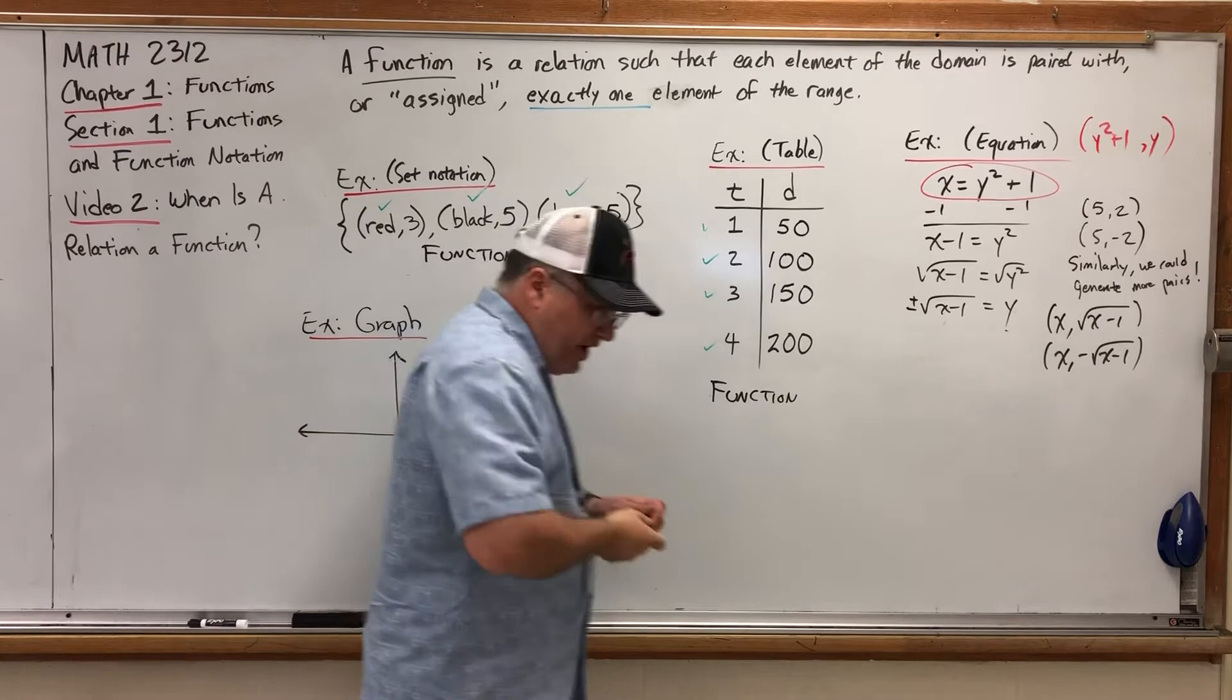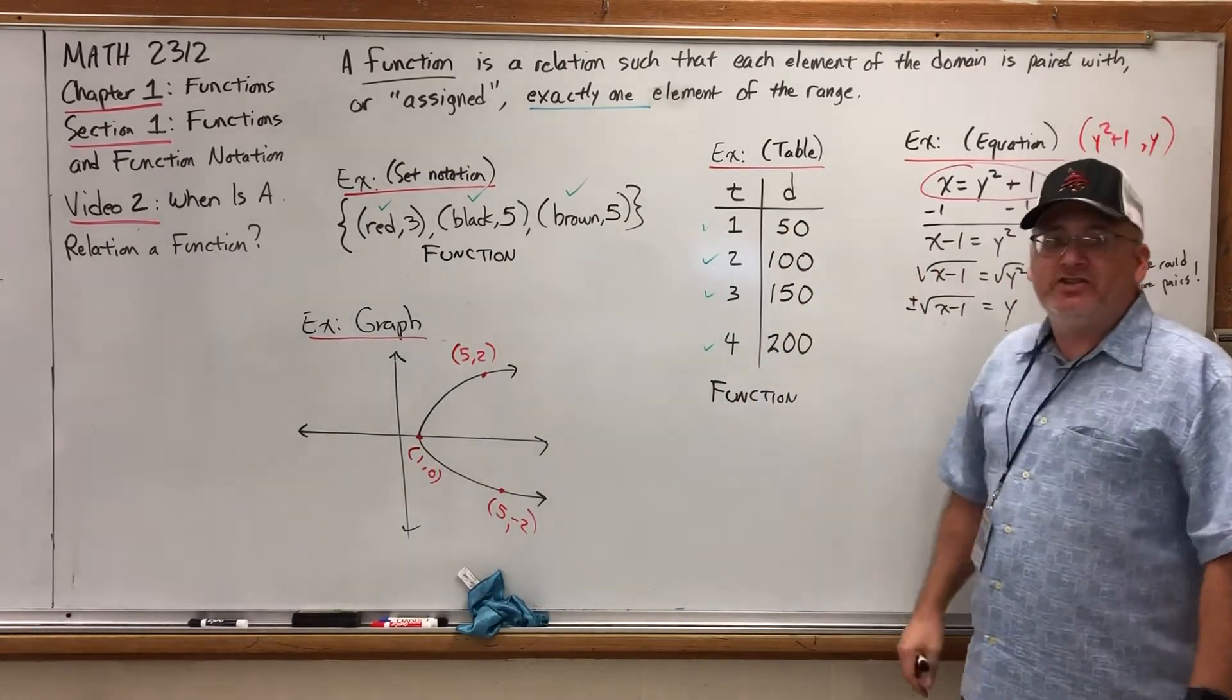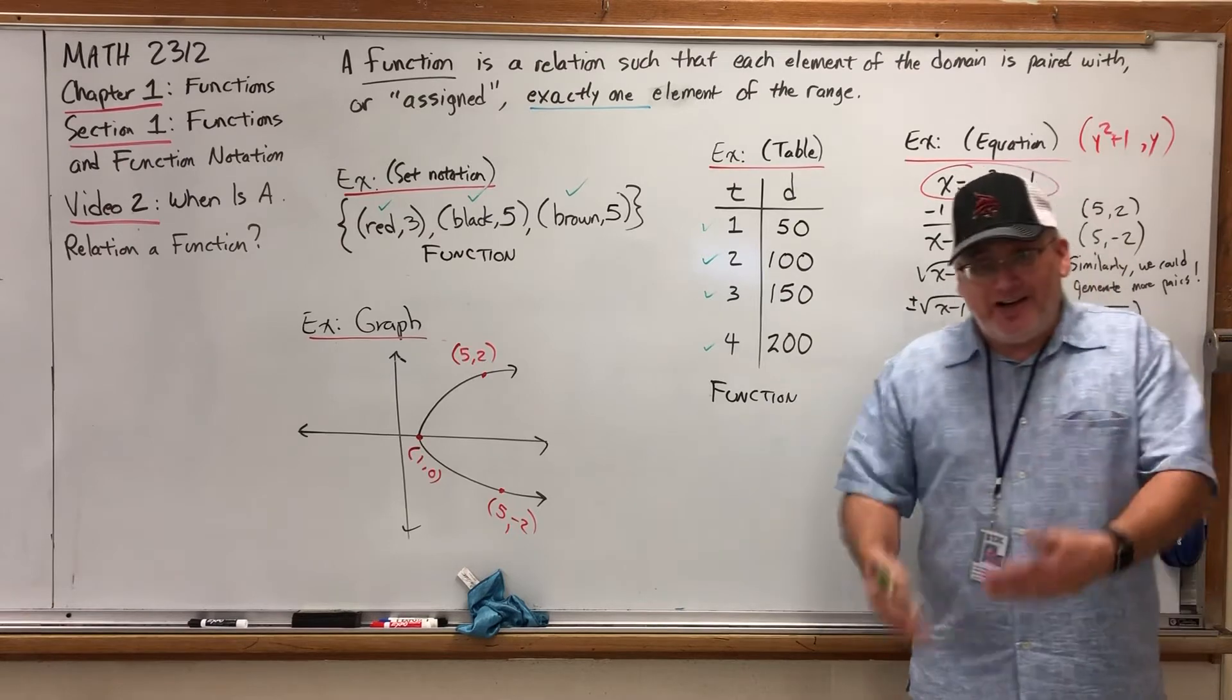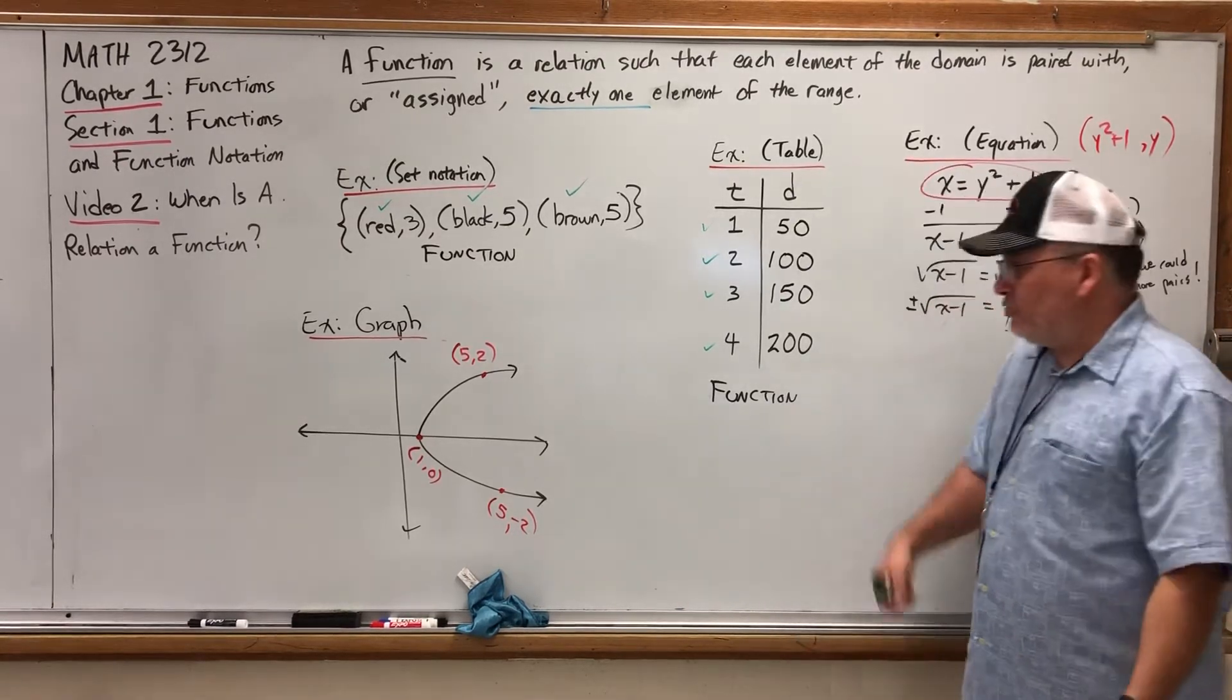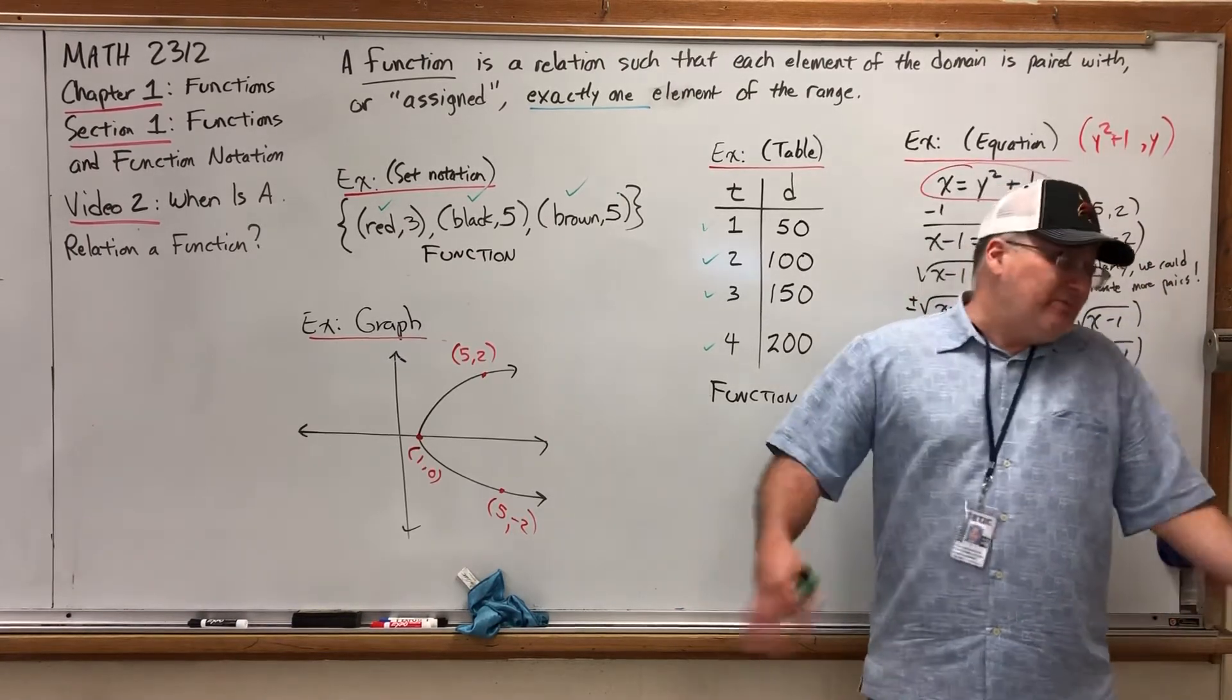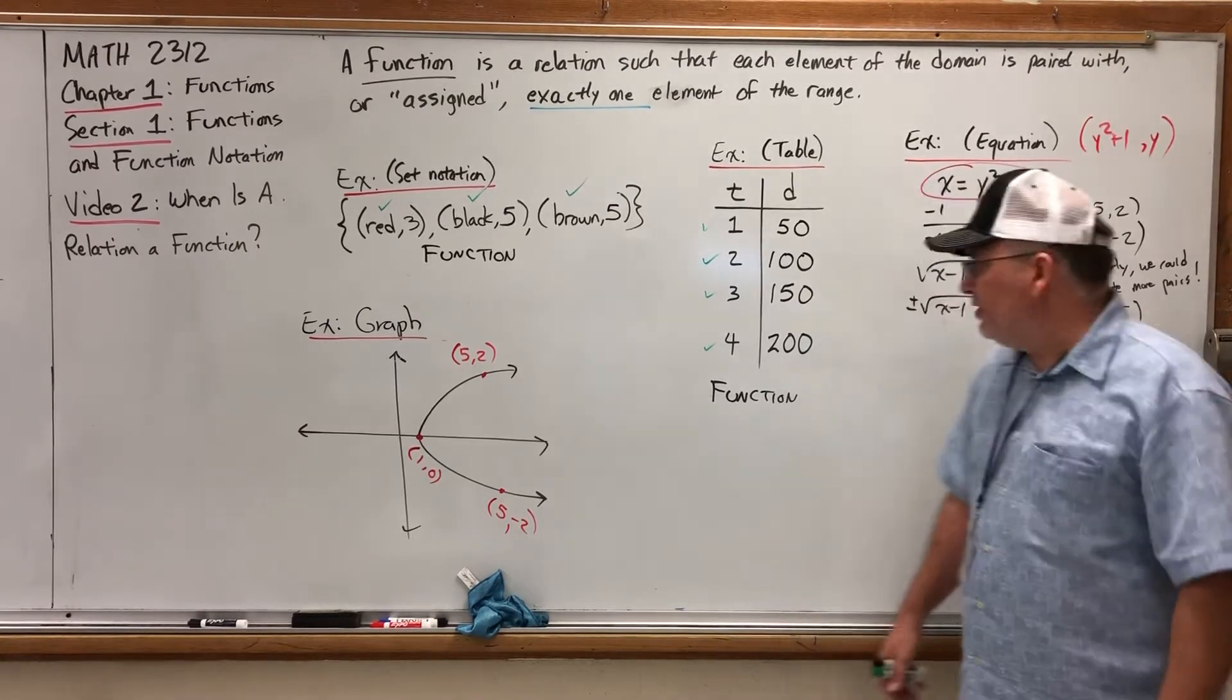Think of it this way. Do you remember the context from this one? T is the number of hours driven. Then, D is the distance you've traveled, if you're traveling 50 miles per hour. Being a function basically means, if I tell you a time, you can tell me one and only one distance. You can't say I'm driving 50 miles an hour, and after two hours, I've driven 100 miles. But at the same time, I've driven 120. No, you haven't. There's only one output, and it was 100 miles.